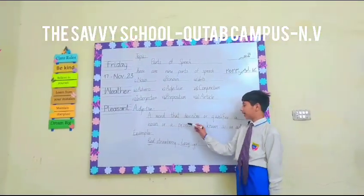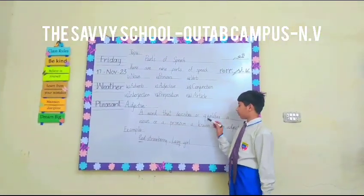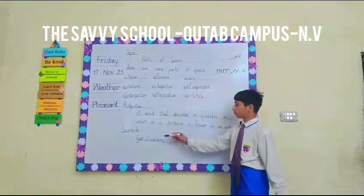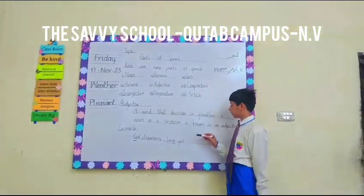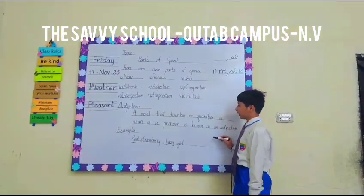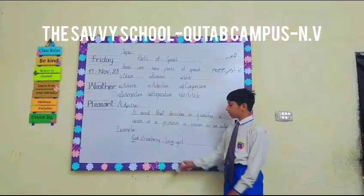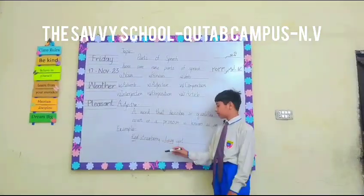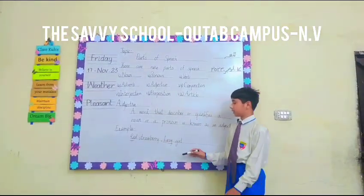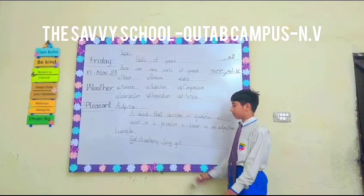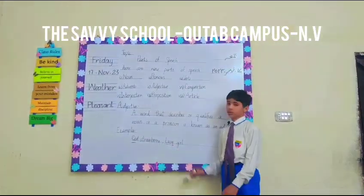Adjective. A word that describes or qualifies a noun or a pronoun is known as an adjective. For example: 'That's a very lazy girl.' In this example, 'lazy' is the adjective.